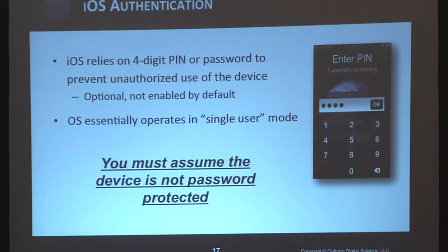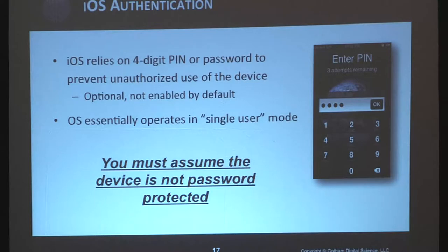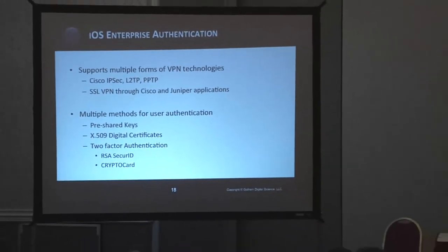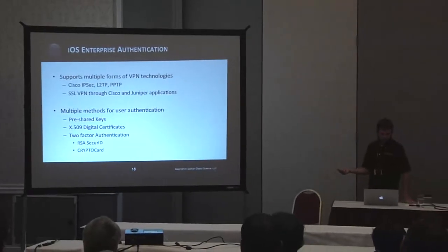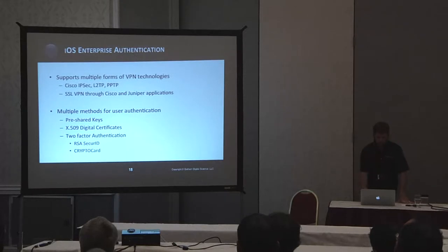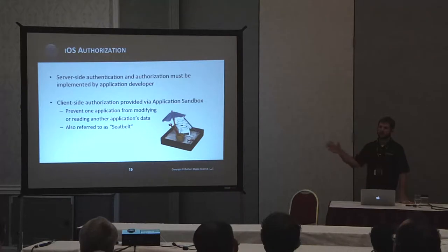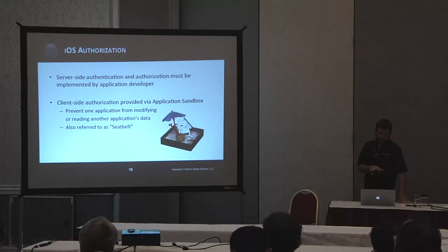The encryption relies on a four-digit PIN, but you can also use a stronger alphanumeric password. From a development standpoint, when storing data on the device, you have to assume that the user is not going to enable a passcode — that's not something you have control over. So you have to assume a potentially large fraction of your users won't set a passcode. From an enterprise perspective, iOS supports multiple VPN technologies and multiple methods for user authentication including pre-shared keys, X.509 digital certificates, two-factor authentication through RSA SecureID and CryptoCard. Server-side authentication must be implemented by the application developer. Client-side authorization provided by Apple is the application sandbox, which prevents one application from talking to another.